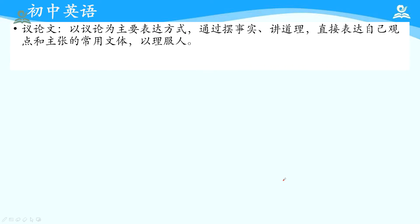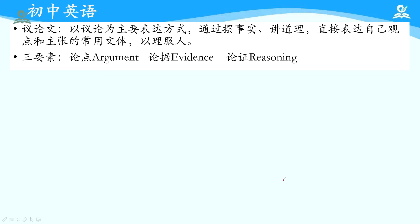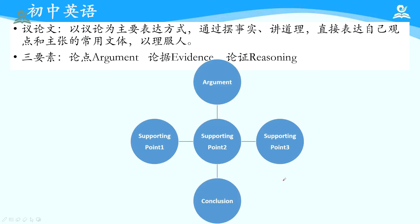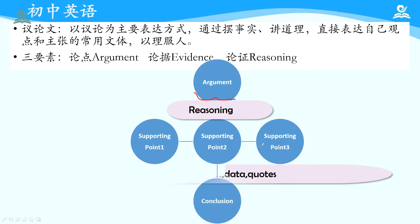这节课围绕两个目标来探索。议论文是以议论为主要表达方式，通过摆事实、讲道理，直接表达自己观点和主张的文体，以理服人。议论文的三要素是：论点、论据、论证。在体系比较完善的议论文当中，围绕核心论点，往往还会设置几个支撑论点来论证。Evidence in the test is usually displayed in forms including facts, examples, data, and quotes.